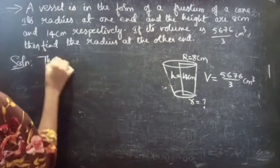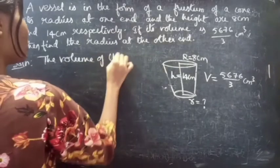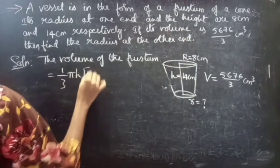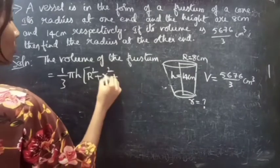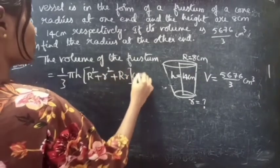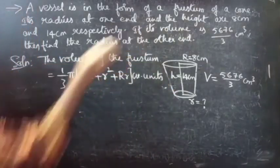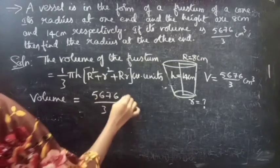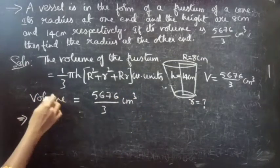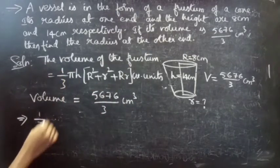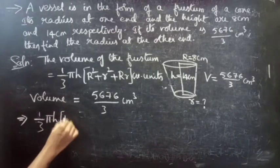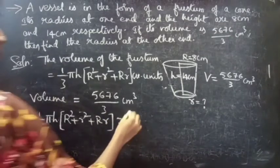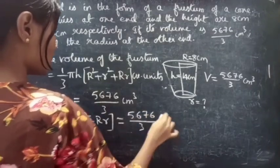We know that the volume of a frustum equals (1/3)πh(R² + r² + Rr) cubic units. We are given that the volume equals 5676/3 cm³. So we write: (1/3)πh(R² + r² + Rr) = 5676/3 cm³.